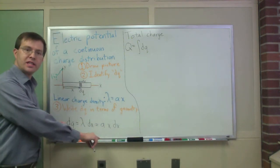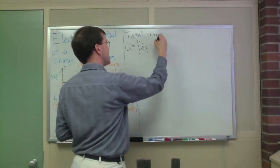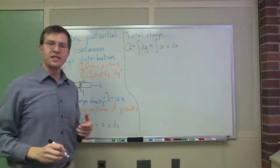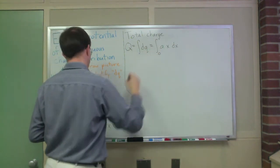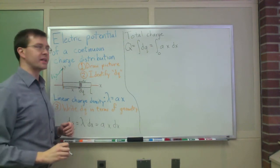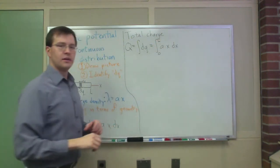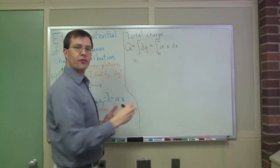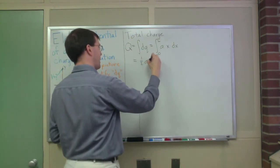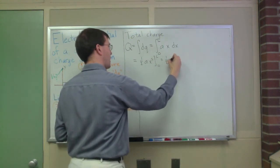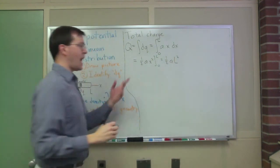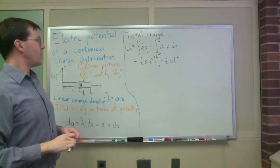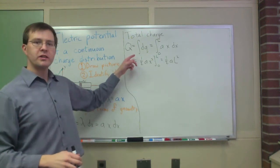The point of doing this geometrical thing, writing dq in terms of dx, is that we can now write that as an integral of constant a x dx. Since it's in terms of x, we know the limits of integration. It goes from x equals 0 to L. My rod has length L. This is an easy integral because a is a constant. This is just one half a x squared evaluated from 0 to L, or one half a L squared. So I have an equation now for the total charge Q in my system.